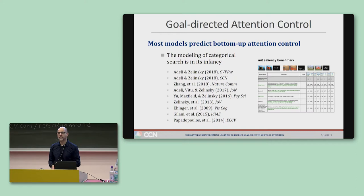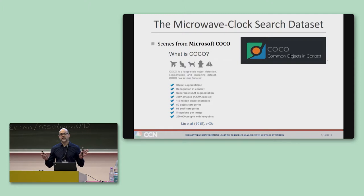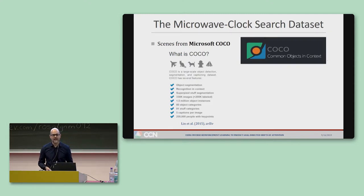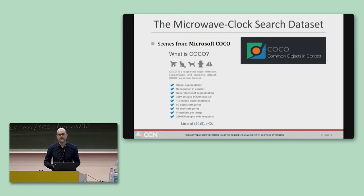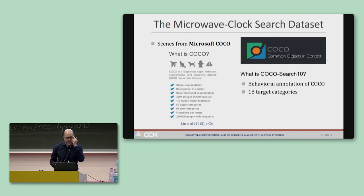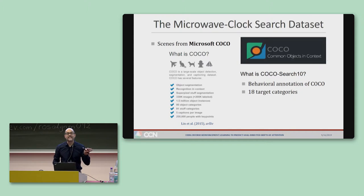So let me detour for a few minutes and tell you about our microwave-clock search dataset. The dataset is built from Microsoft COCO — a wonderful dataset that consists of over 200,000 images of scenes segmented into 80 object categories, which is really ideal for training deep nets to predict search behavior. We're about halfway through the creation of COCO Search 18, a large-scale effort to behaviorally annotate a big chunk of COCO with goal-directed human fixations across 18 of its categories.